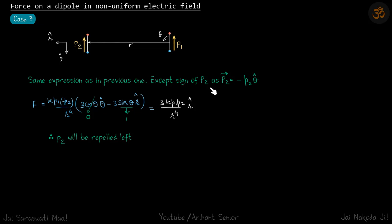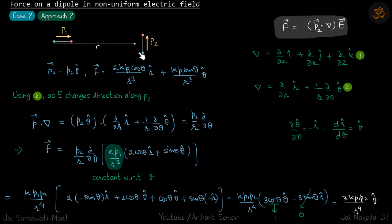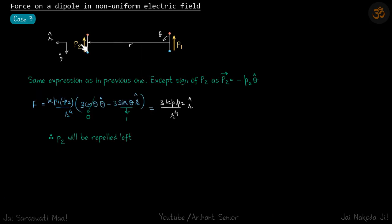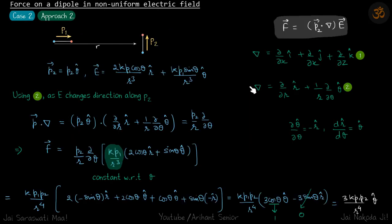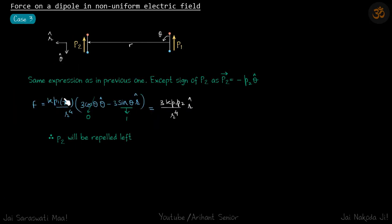The expression is the same as before, except the sign of p2 changes: p2 is now aligned along θ-cap, so p2 = p2 θ-cap. Therefore, everywhere p2 appeared, minus p2 now travels through, giving a minus sign. Our equation becomes k·p1·(−p2) / r⁴ · (3cosθ θ-cap − 3sinθ r-cap).